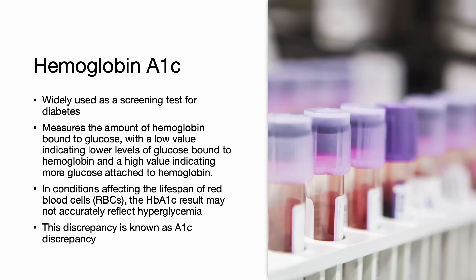Let's talk about hemoglobin A1c, since it is widely used as a screening test for diabetes. Hemoglobin A1c measures the amount of hemoglobin bound to glucose, with a low value indicating lower levels of glucose bound to hemoglobin and a high value indicating more glucose attached to hemoglobin. Yet, in conditions affecting the lifespan of red blood cells, the hemoglobin A1c result may not accurately reflect hyperglycemia. This is known as A1c discrepancy.